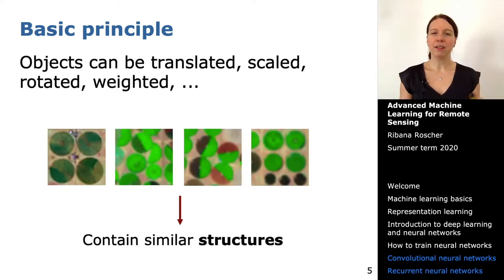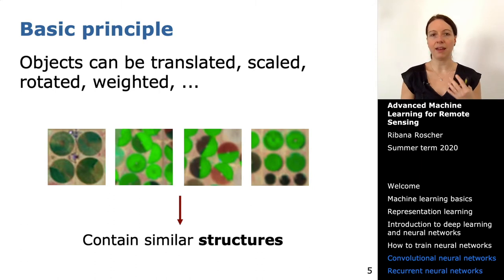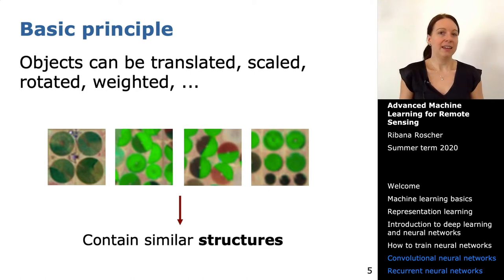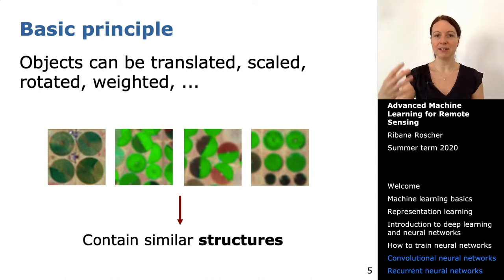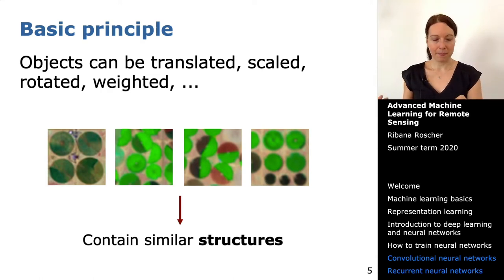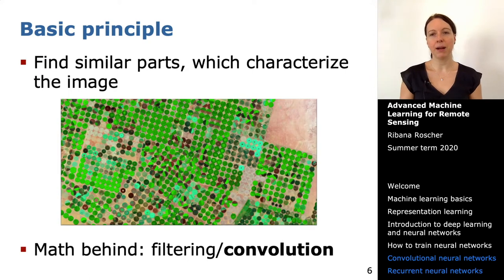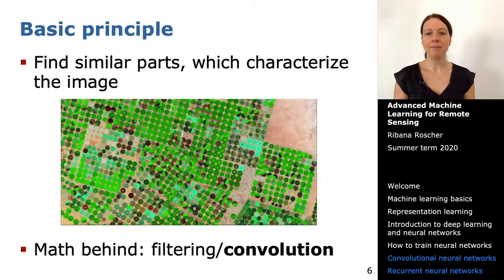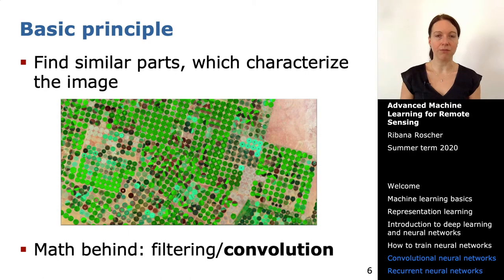Looking at the complete image, there are many round objects, but they differ — some are translated, scaled, rotated, or have a different spectral appearance. In the end, they all have this round structure and contain similar features. The trick CNNs use is that they compare parts of images rather than the whole thing. The CNN finds similar parts which characterize the whole image, and the math behind this is convolution, also called filtering.